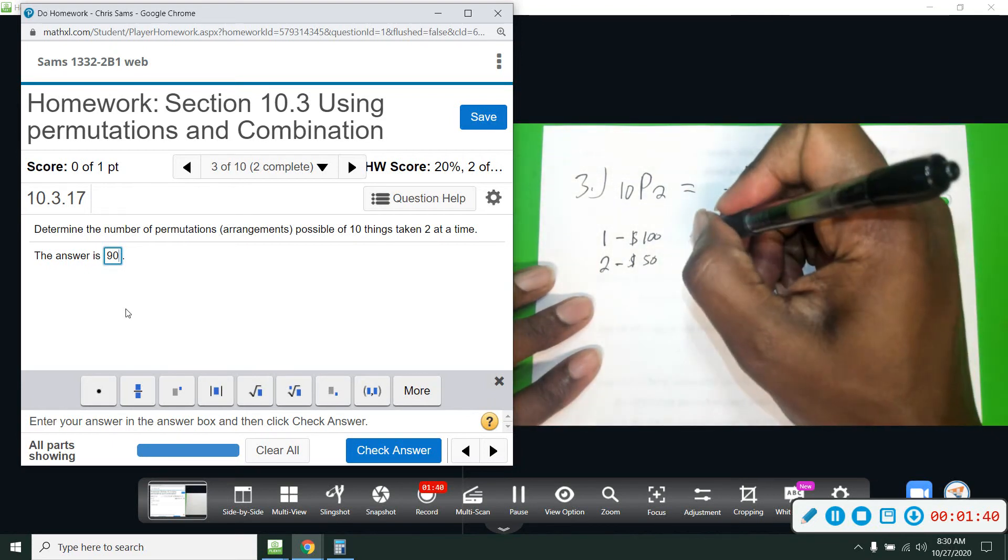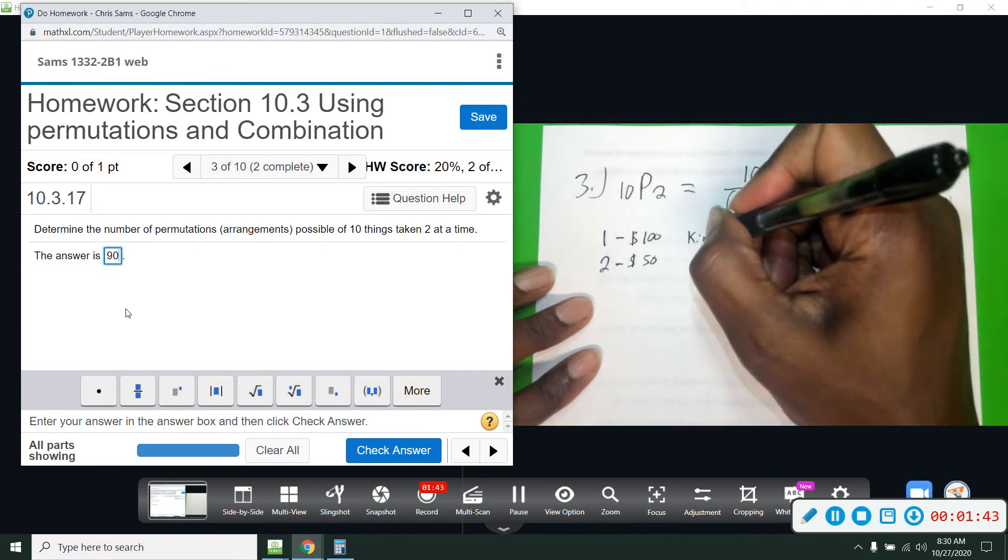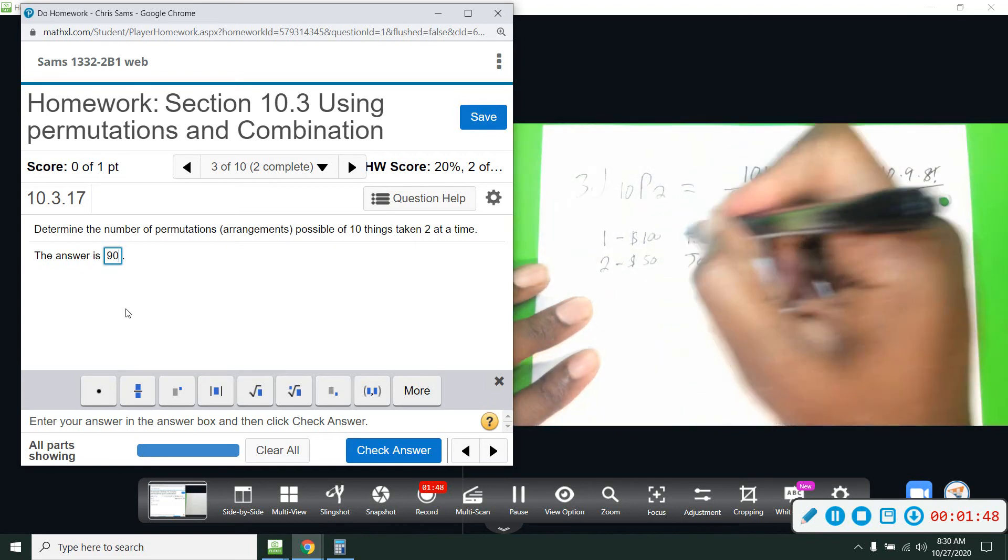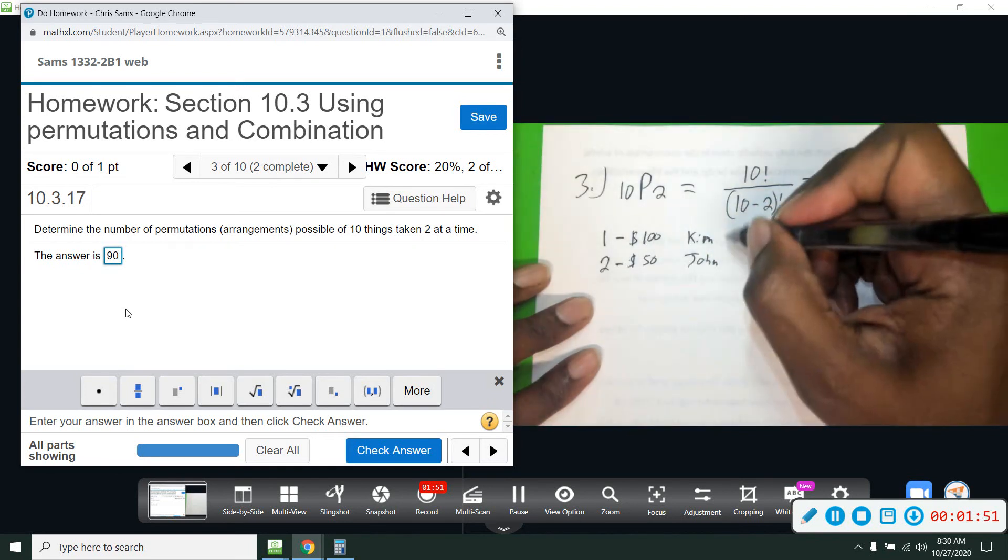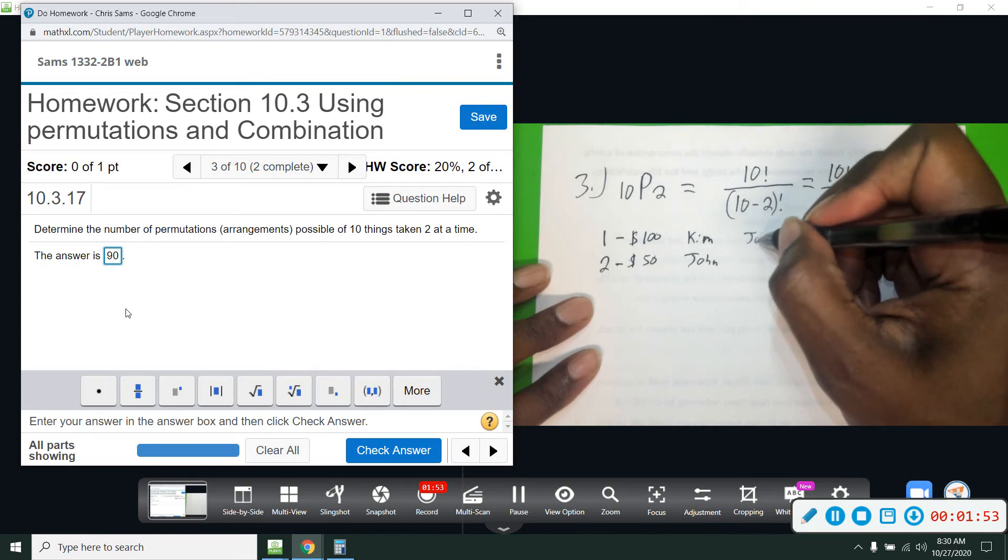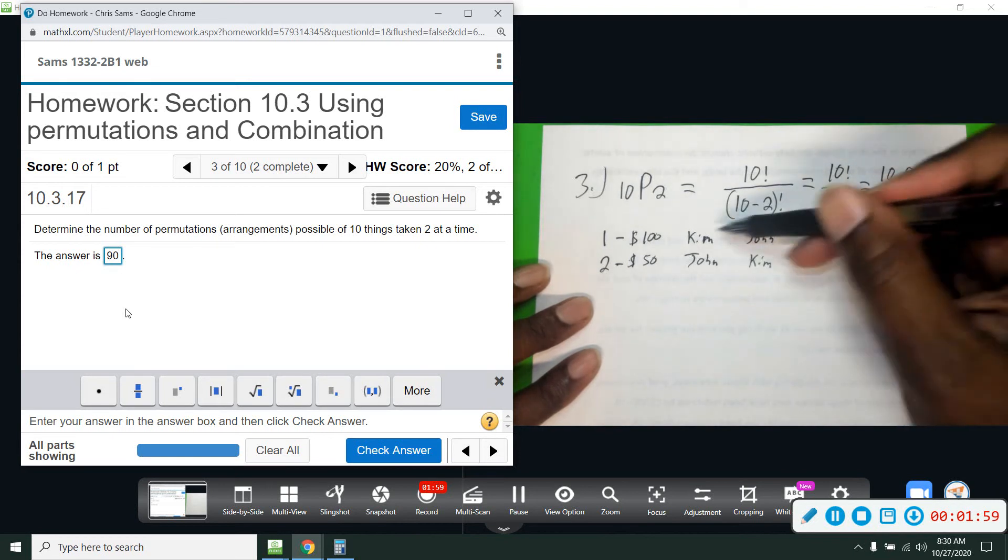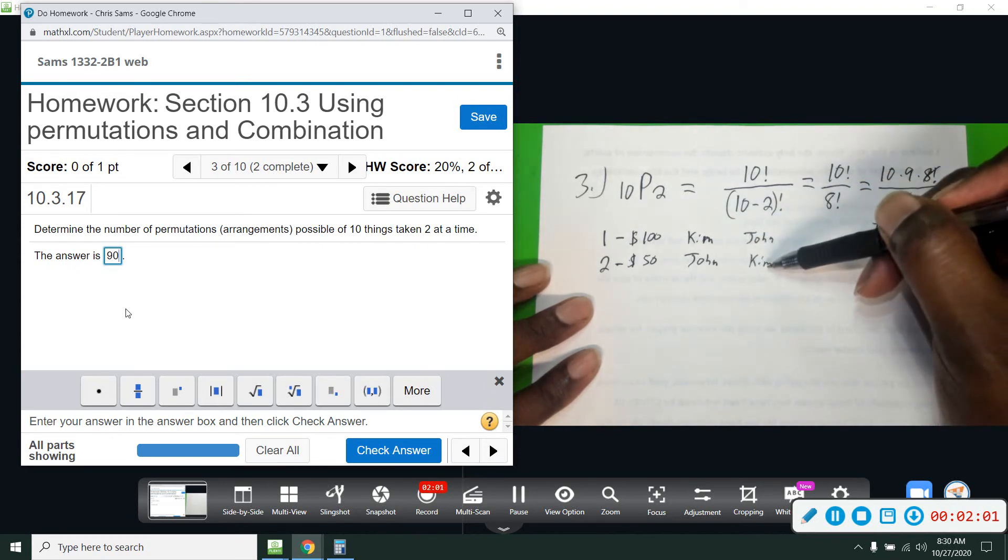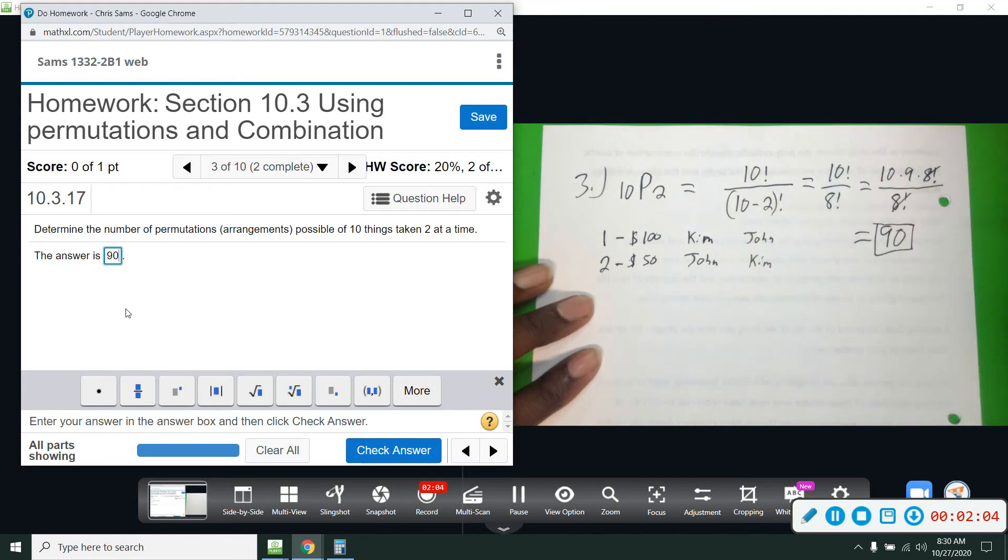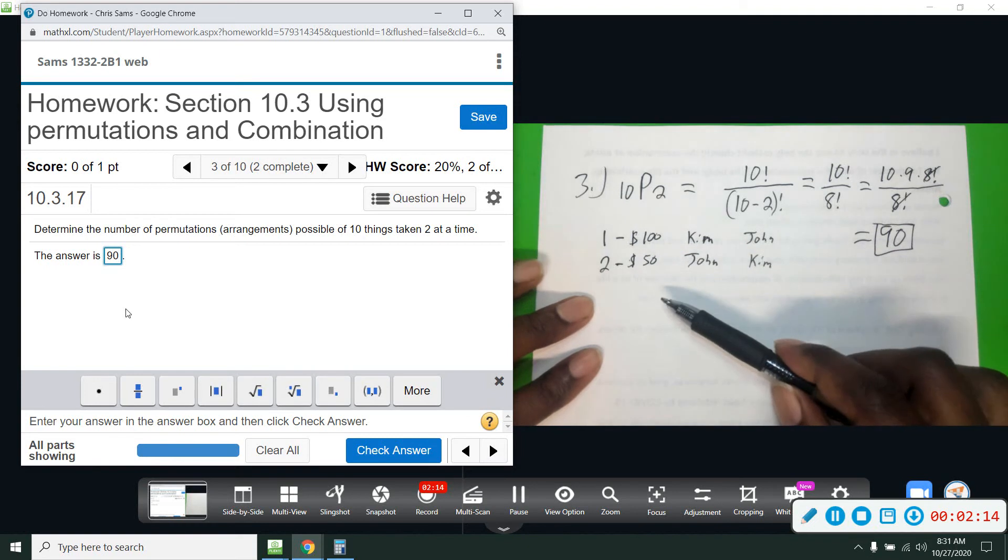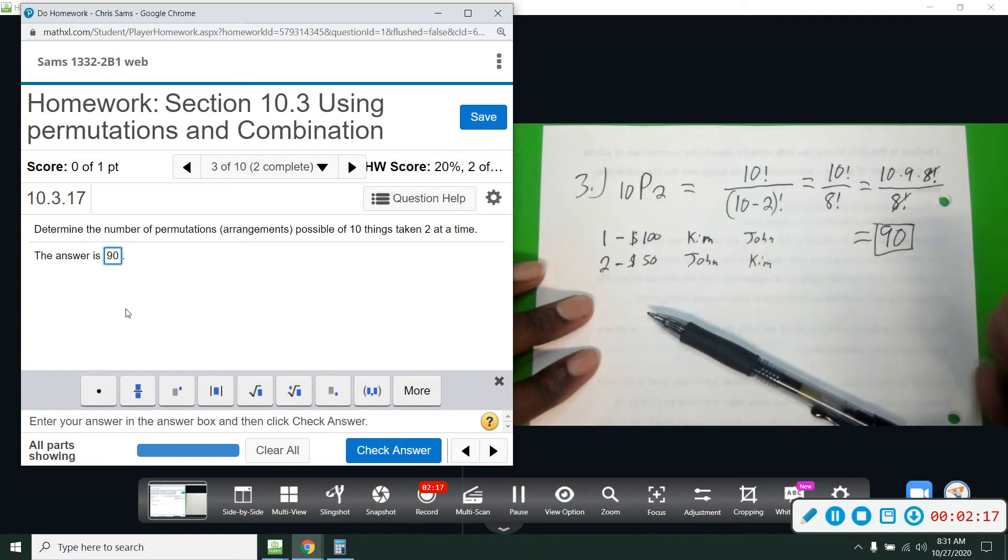So I could draw, let's just say, Kim and John. So that means Kim got a hundred and John got fifty, versus if I drew John first and then Kim. Even though it's the same two people, this would be different because this time John got a hundred and Kim got the fifty. So permutations takes into account the ordering of the objects that you're drawing because there's a distinguishable difference in the selection as far as a job or a reward or something of that nature.